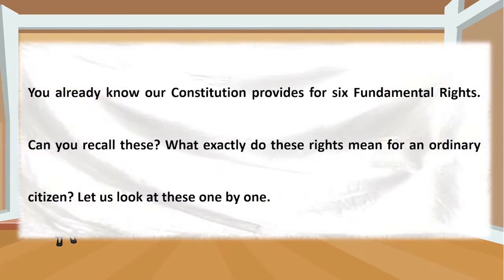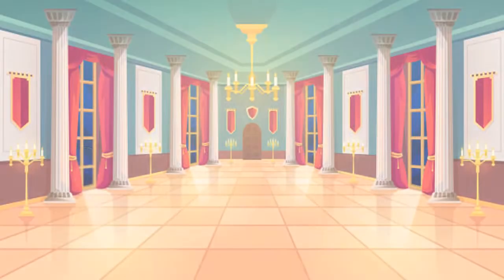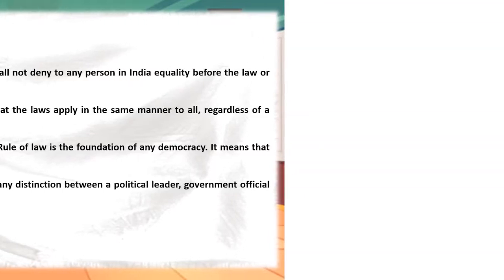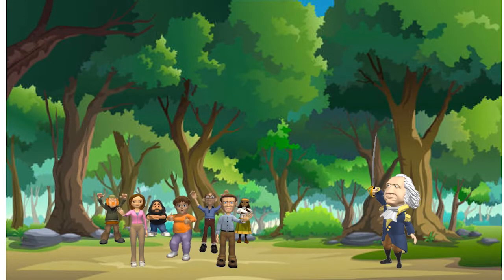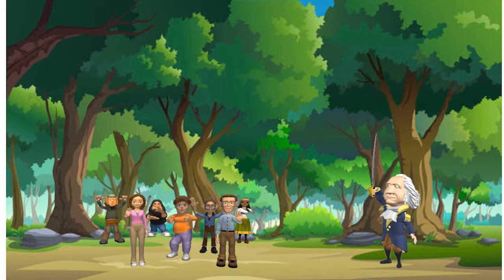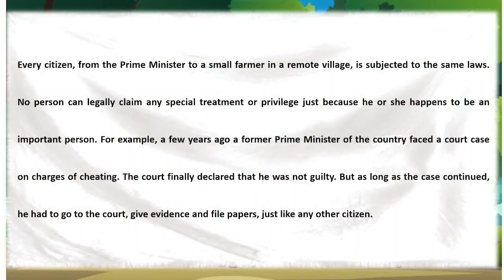Let's start with the right to equality. According to this right, the constitution of India should treat every citizen equally, irrespective of caste, creed, colour, or money. Every person is the same in front of the law — this is called the rule of law, which stays the foundation of democracy. Every person is the same before the law, whether a political leader, government official, or a normal citizen. From the prime minister to a person living in a rural area, every person is subject to the same law and its consequences. No one should be provided with privileges in front of the law just because they claim to be important.